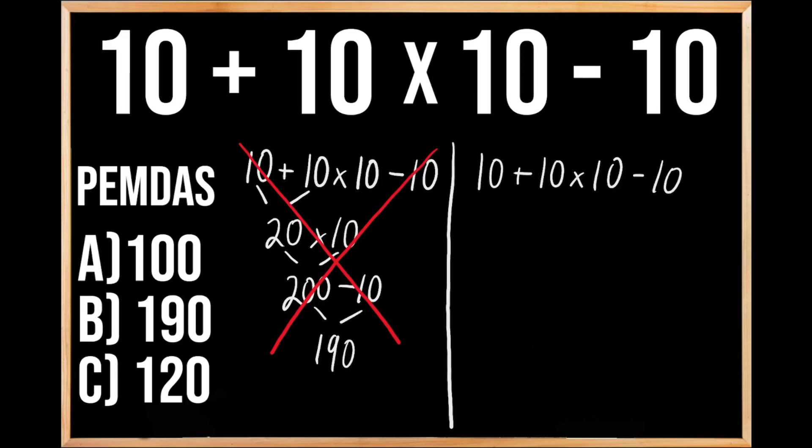Since we have multiple operations within this problem, we need to make sure that we're following the order of operations. And over on the left-hand side, we can see the acronym PEMDAS, which stands for the order of priorities when solving problems just like this.